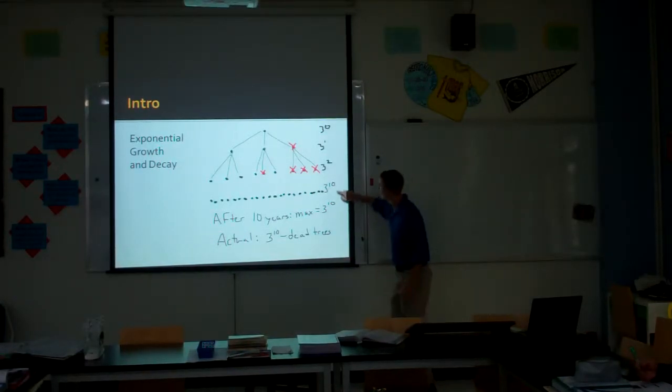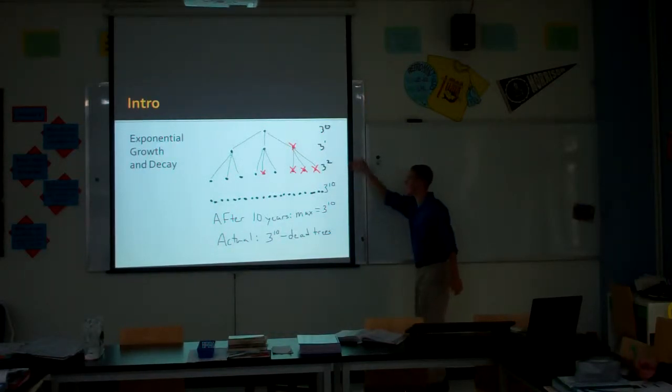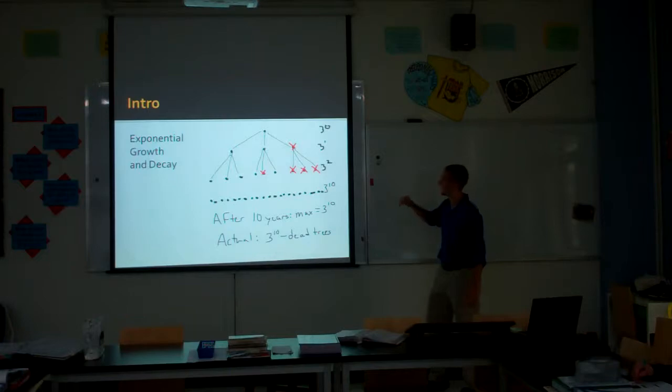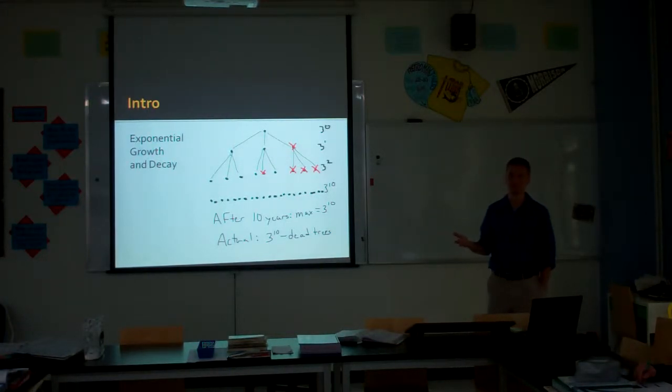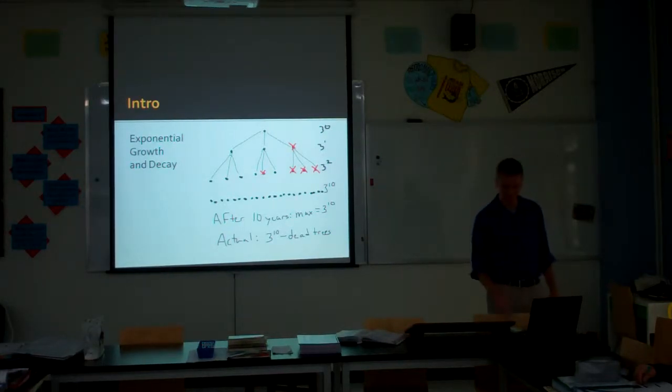After zero years, we still have three to the zeroth trees, the one. Then three to the first after the first year of seeding. Then nine, depending on how many died. After ten years, we have a maximum number of trees of three to the tenth. This should be old hat for you, meaning you know how to do it. The actual value will of course be three to the tenth minus all those dead trees or the ones which didn't end up planted.